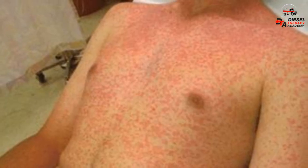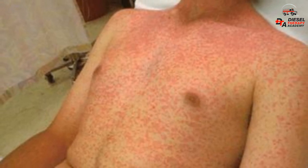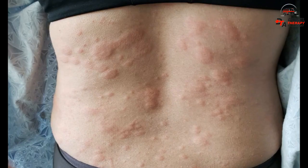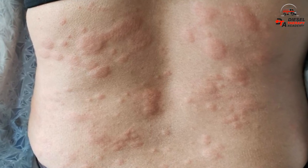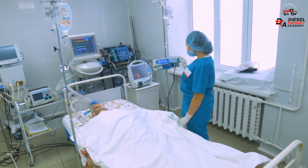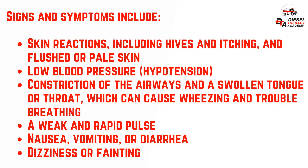Anaphylaxis is a severe, potentially life-threatening allergic reaction. It can occur within seconds or minutes of exposure to something you're allergic to, such as food or bee stings. Anaphylaxis causes the immune system to release a flood of histamine that can induce vasodilation, vascular permeability, causing edema in the interstitial space and bronchoconstriction, resulting in shock. Signs and symptoms include: skin reactions including hives and itching, and flushed or pale skin; low blood pressure (hypotension); constriction of the airways and a swollen tongue or throat, which can cause wheezing and trouble breathing; a weak and rapid pulse; nausea, vomiting, or diarrhea; and dizziness or fainting.